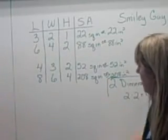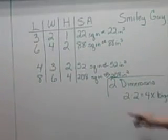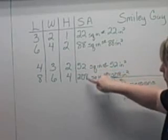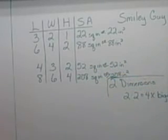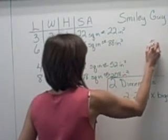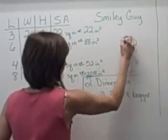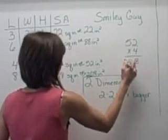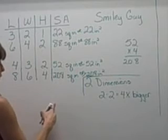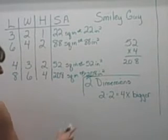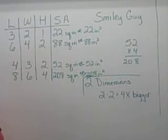So now I need to decide if I multiply fifty-two times four, does that give me two hundred-eight? Well, fifty-two times four. Two times four is eight. Five times four is twenty. That's two hundred-eight. So it looks to me like if you double all the dimensions, then your surface area is four times bigger.